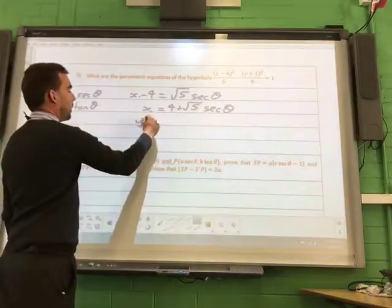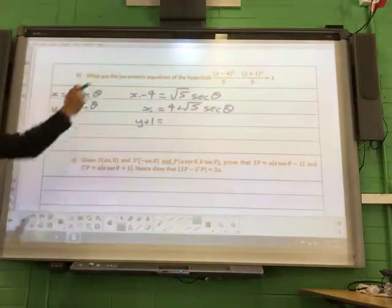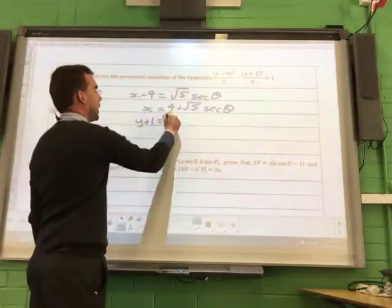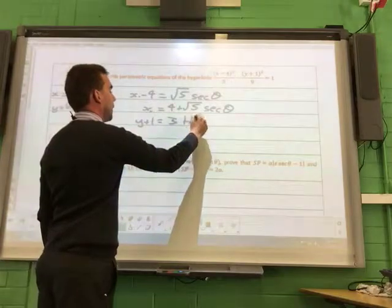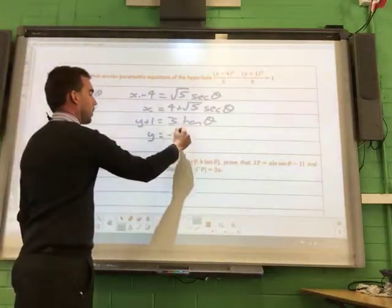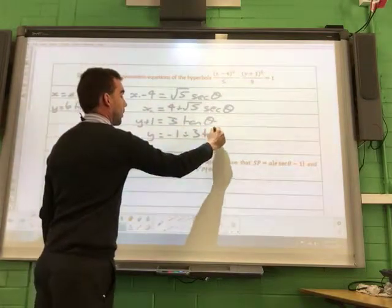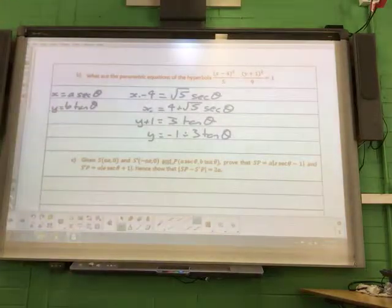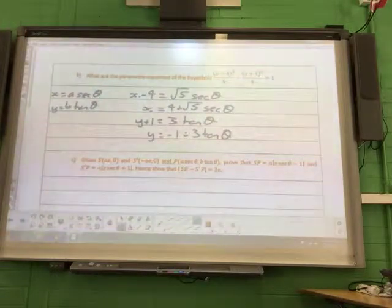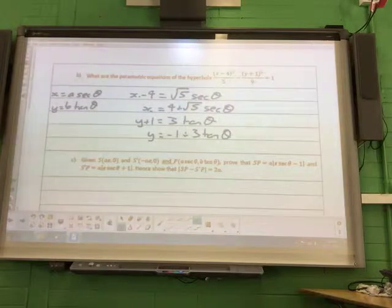And y plus 1 is going to be b tan theta. So b squared is 9. So b is going to be 3 tan theta. And that's your y value with respect to theta with respect to your parameter. Any questions for that one?